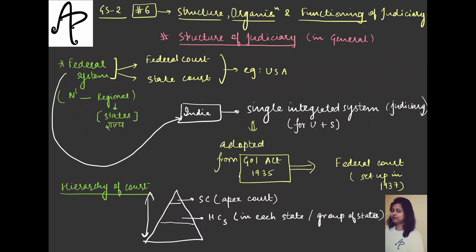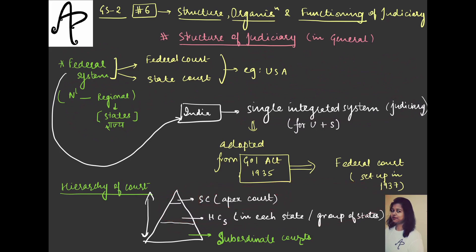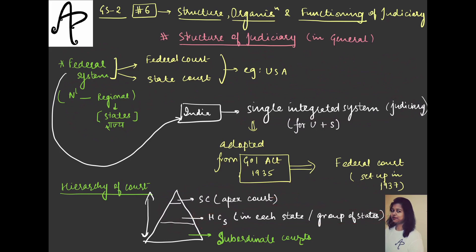Below this — and this becomes important — we have the subordinate courts, which are below the Supreme Court and High Court. Now these two upper levels are simple: the Supreme Court is a single court, the apex court, and we will cover its details. High Courts are in each state — or if there are multiple states or Union Territories sharing one, we will see that in the next class.